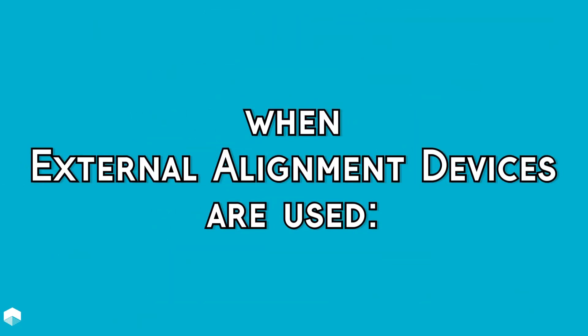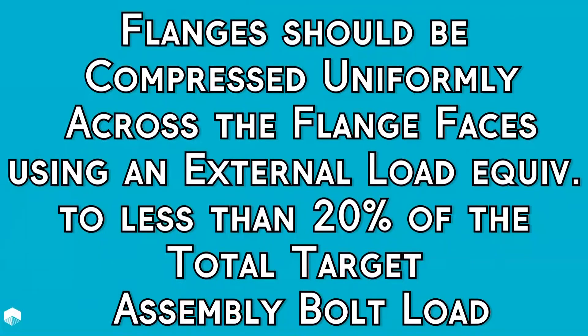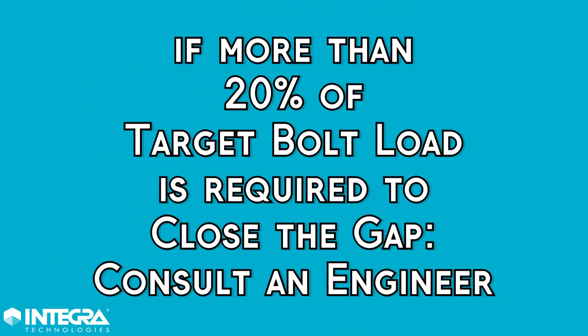When external alignment devices are used, the flanges should be compressed uniformly across the flange faces, using an external load equivalent to less than 20% of the total target assembly bolt load. If more force is required to bring the flange gap into compliance, please consult an engineer.